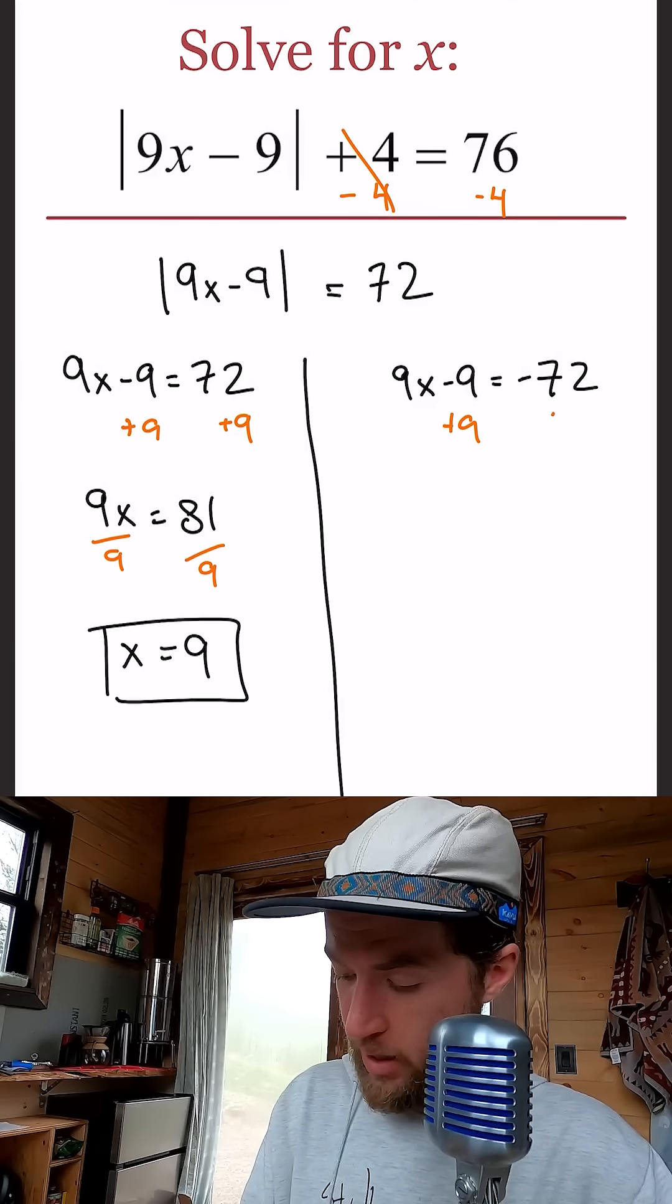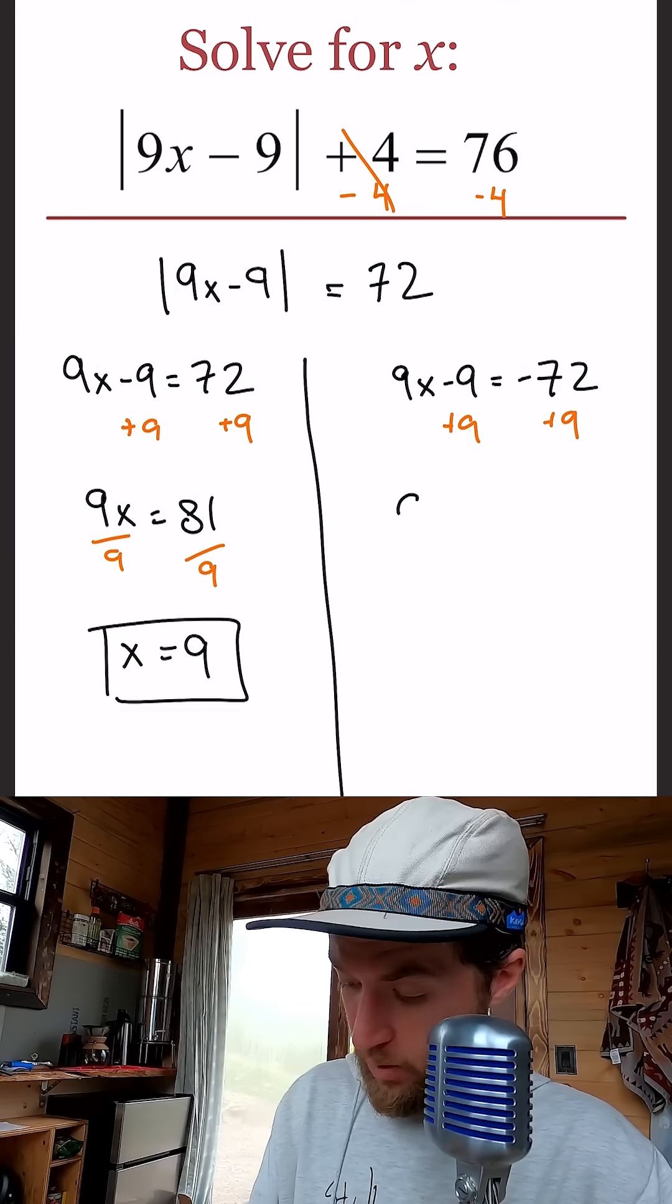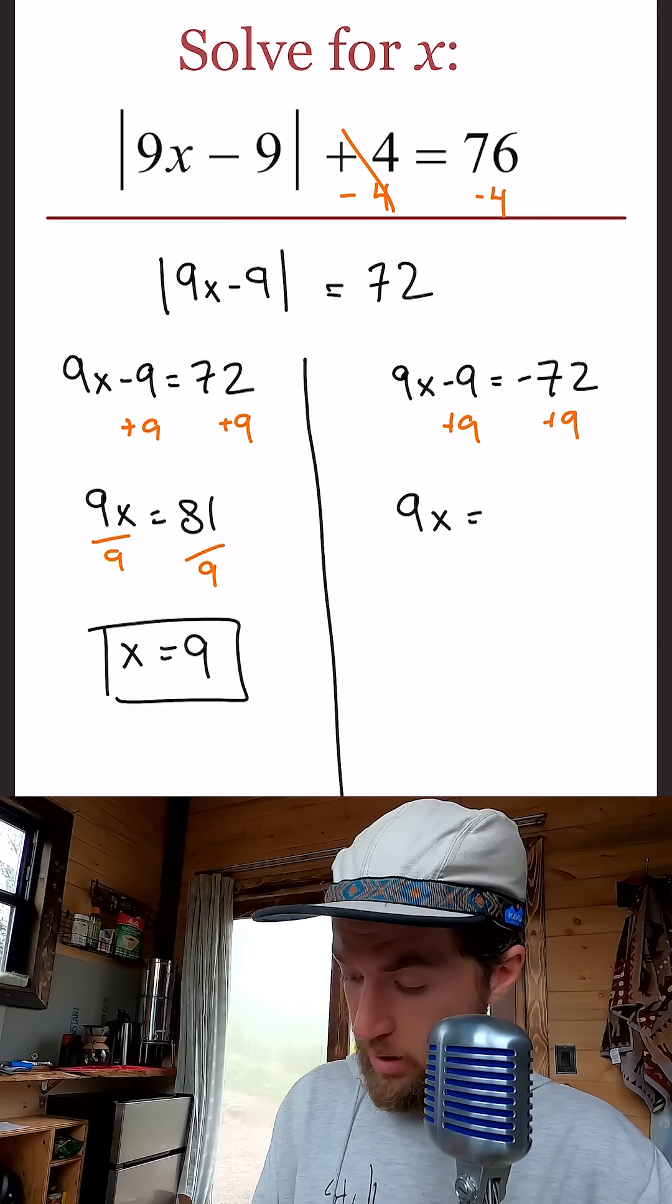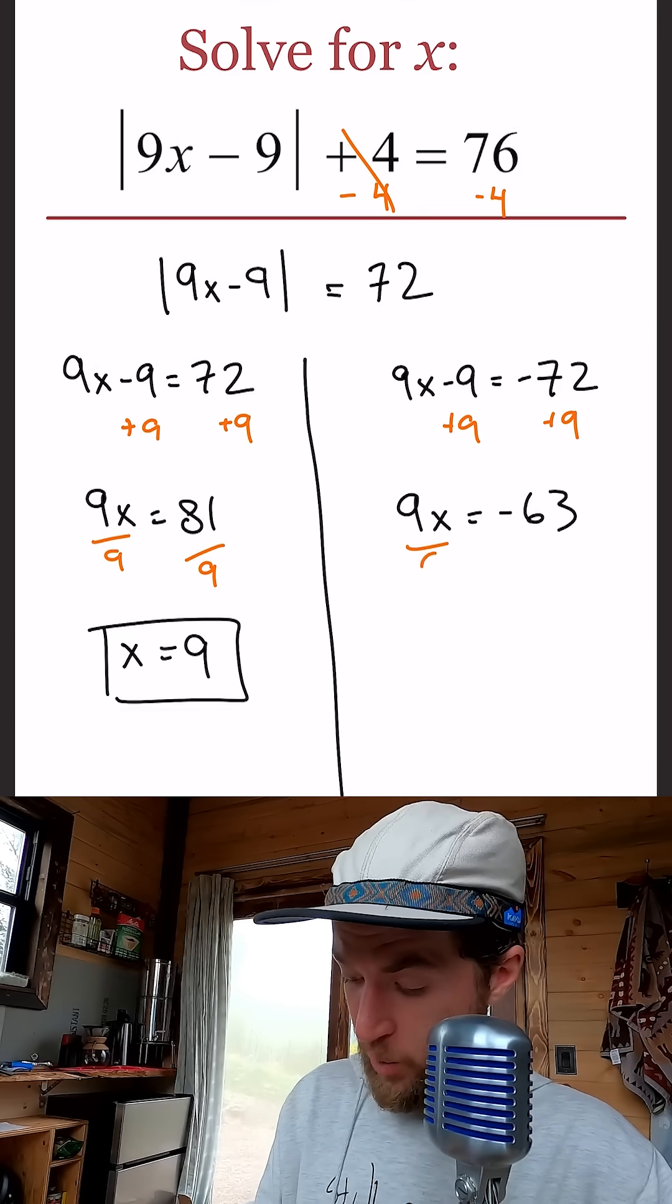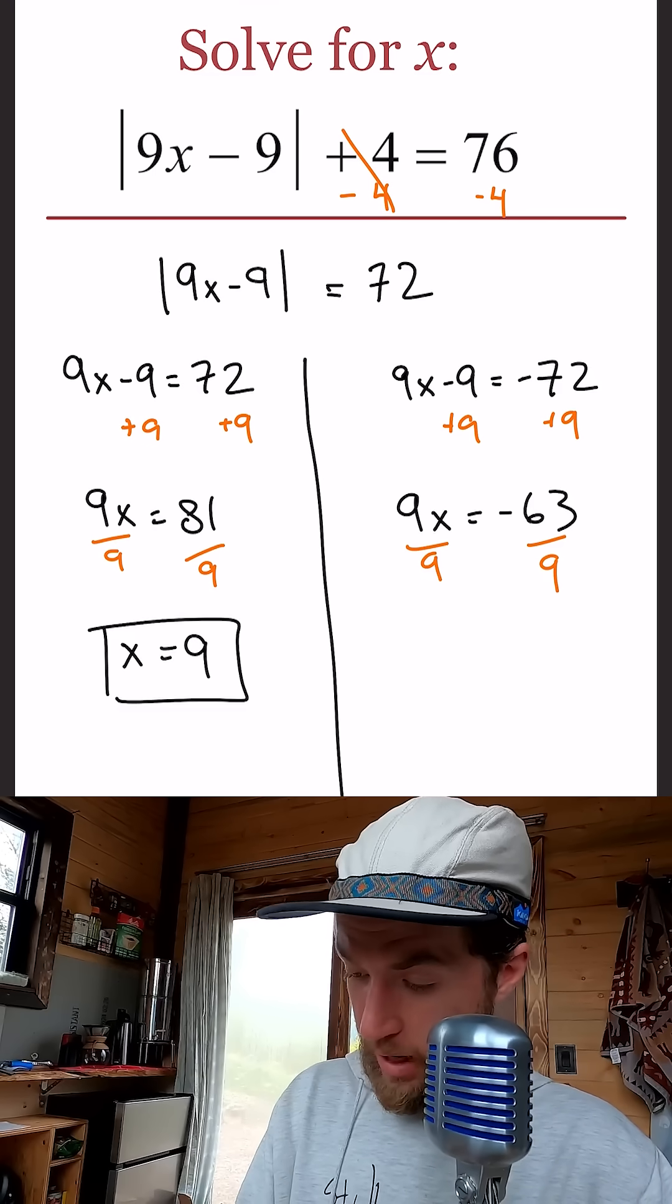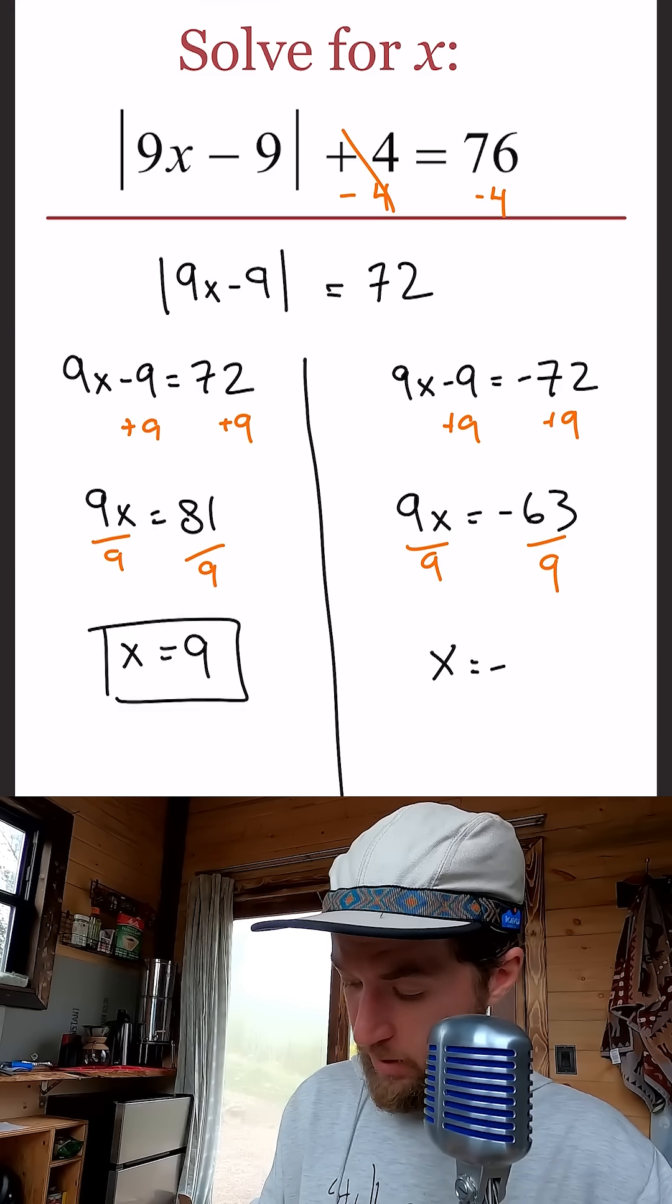Let's go to the right side. Add 9 to both sides. 9x equals negative 63. Divide by 9 on both sides. x equals negative 7.